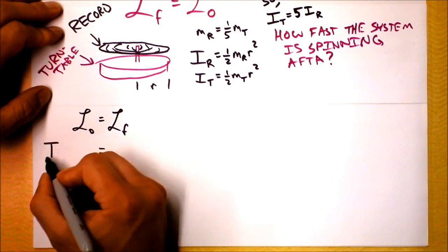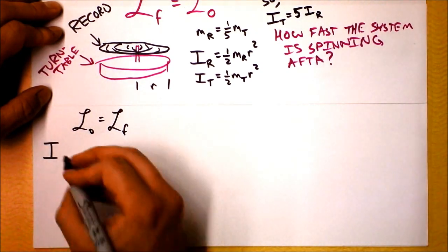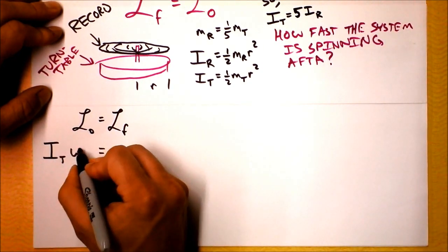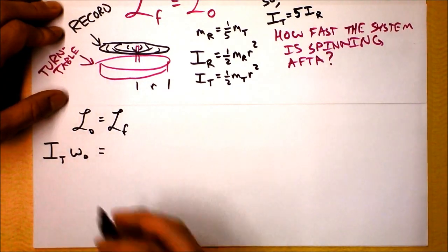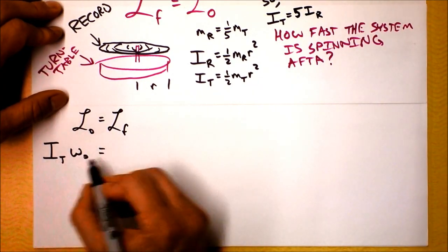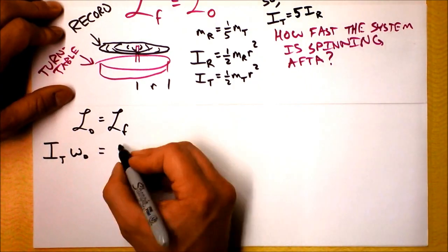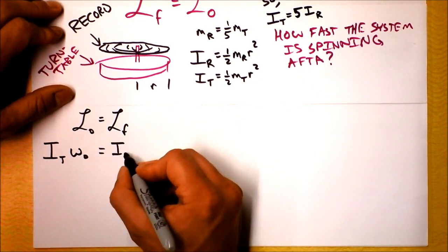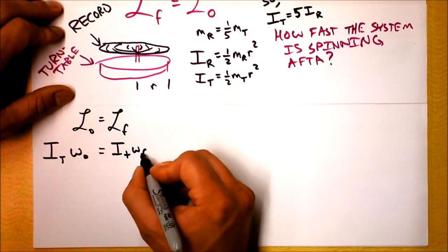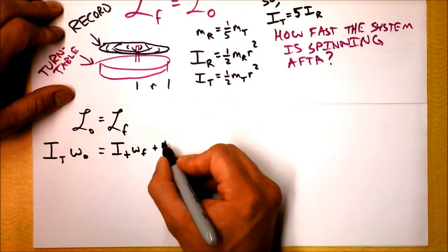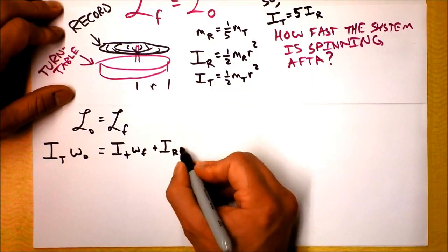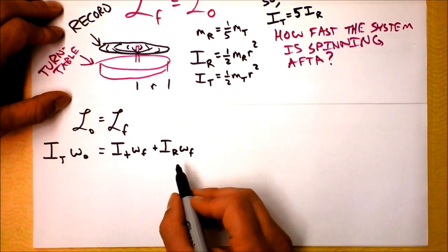And angular momentum is I times omega, so we're going to have the moment of inertia of the turntable times the initial angular velocity, I times omega. And angular momentum on the other side, afterwards, will be the moment of inertia of the turntable times omega final, plus the moment of inertia of the record times omega final. We can make some substitutions here.